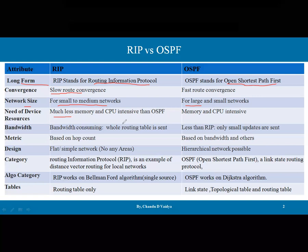For bandwidth consumption, in RIP the entire routing table is sent to neighbors every 30 seconds, so router-to-router bandwidth usage is very high. In OSPF, bandwidth consumption is lower because only small packets are sent whenever there are trigger updates — only the changed descriptions are sent, resulting in less bandwidth usage overall.